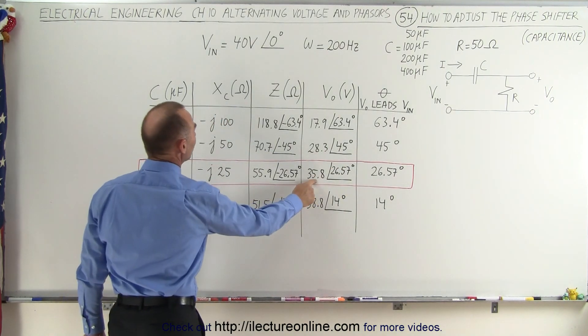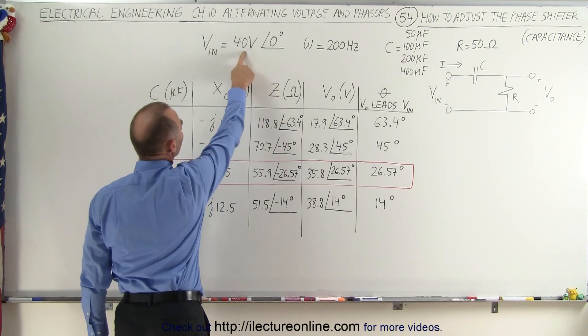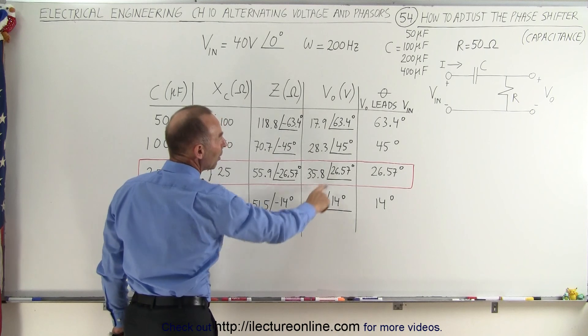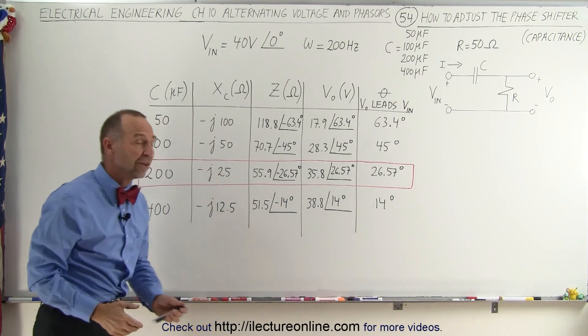Notice that the voltage change was not that large with an input voltage of 40 volts and output voltage of 35.8, so about a 10 percent drop for a phase shift of about 26 and a half degrees.